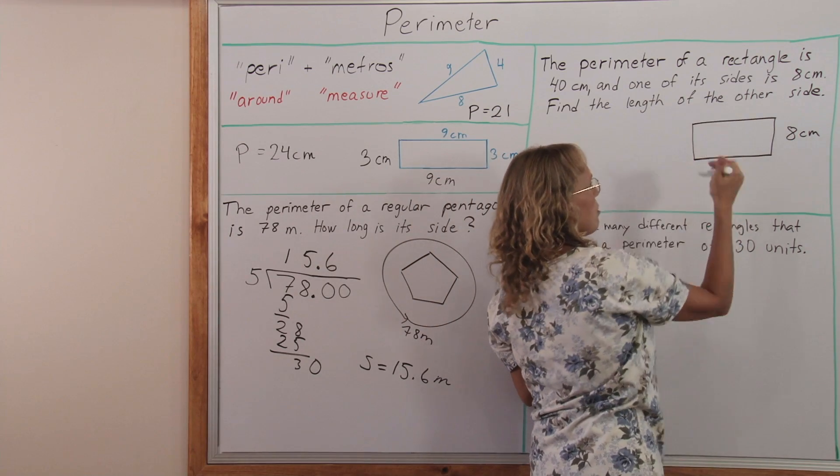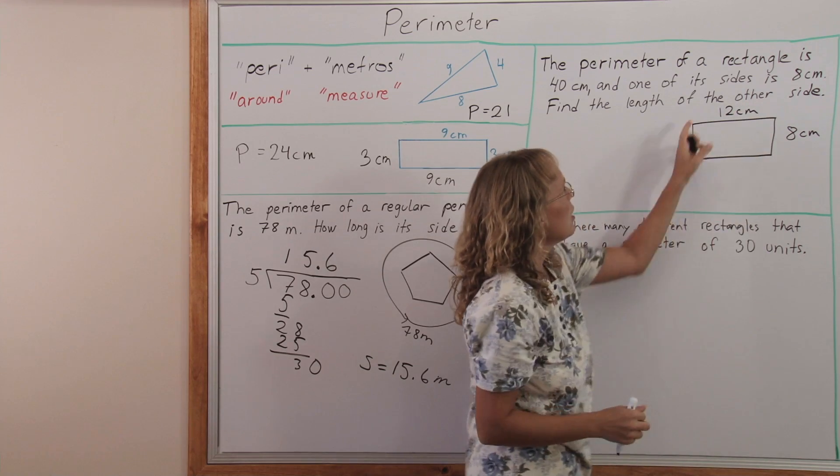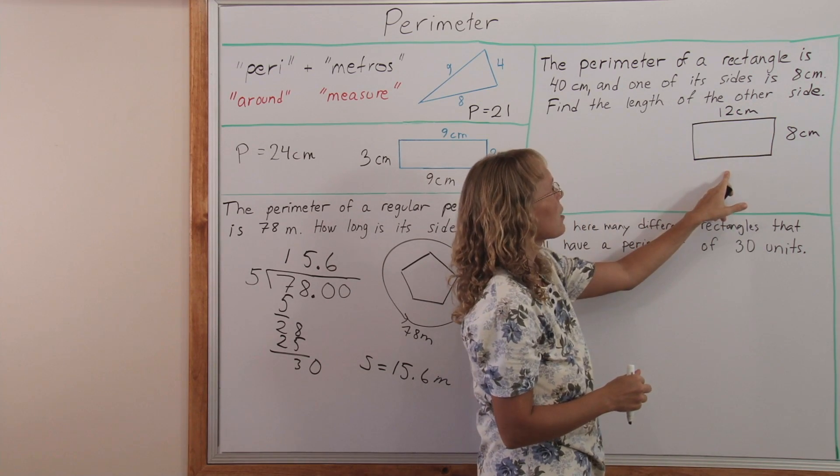This and this makes 20, so it must be 12 centimeters. 12 and 8 makes 20 and then 8 and 12 here makes 20.